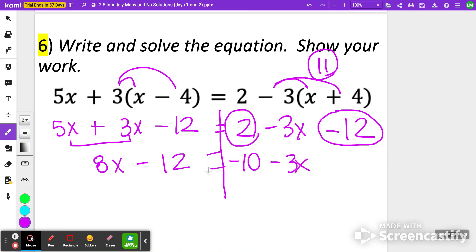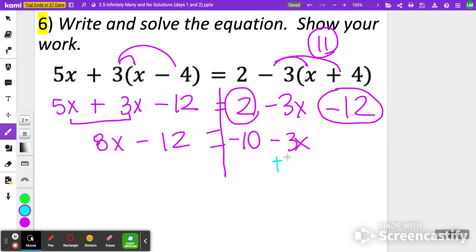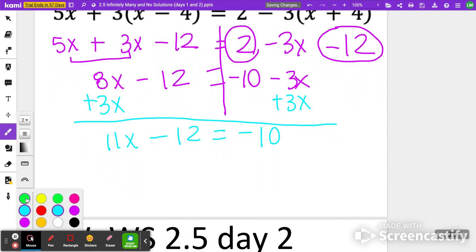Next, I'm going to start moving my variables to all one side. I'm going to add 3X to my left side. So I get 11X minus 12 equals negative 10. Then I'm going to go ahead and undo any adding or subtracting. Let's add 12 to both sides. This one, I'm going to get a fraction. I'm thinking 11X equals positive 2. Final step, dividing both sides by 11.